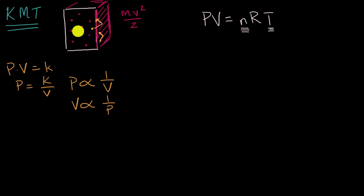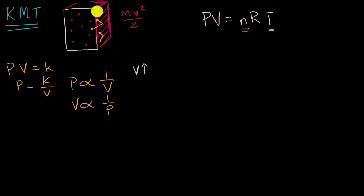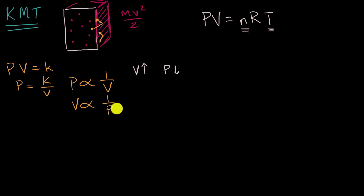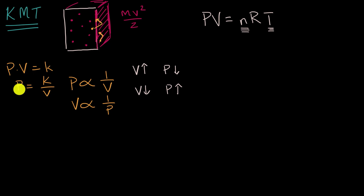Does that make sense from a kinetic molecular theory point of view? Imagine we have our original cube with the same number of particles and the same average kinetic energy, but we increase the volume. In a larger container, at any given moment you'll have fewer bounces of particles off the container walls because they have more room to move, and the surface area is also larger — so pressure goes down. Conversely, if you make the container smaller, those same particles bump into the walls more often, increasing the pressure. This relationship — pressure inversely proportional to volume — is known as Boyle's Law.